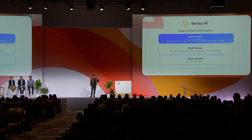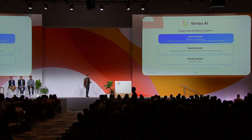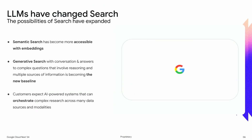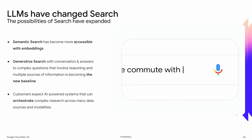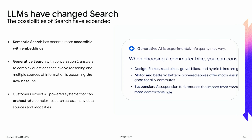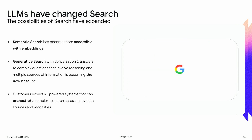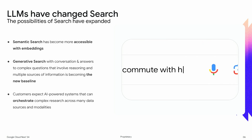Starting with the introduction — this architecture has been shared across a lot of cloud AI and vector search, Vertex AI architecture talks. We're talking about the agent builder portion here, which is effectively all the tool sets for people to build agents. Today we're also talking about search, and one of the things we like to highlight is that the possibility of search has really expanded in the last year and a half. Semantic search has become accessible with embeddings. Generative search with conversations and answers is now widely available, and customers expect AI-powered systems that can orchestrate complex reasoning across many different data sources.